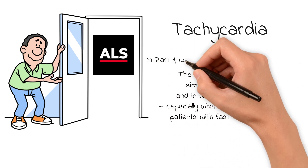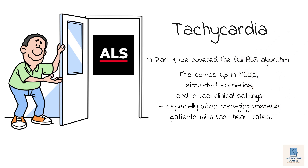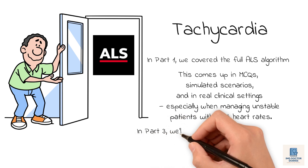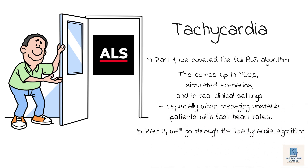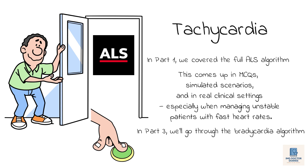In part 1, we covered the full ALS algorithm, including how to handle shockable and non-shockable rhythms in cardiac arrest. If you missed that, you can watch it now on my channel — it's linked in the description. In part 3, we'll go through the bradycardia algorithm, which will be uploaded within the next week. Today, though, it's all about tachycardia, step by step, with a full breakdown of what to do based on the rhythm and patient stability.